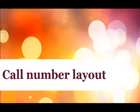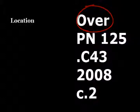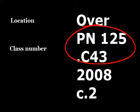The first thing we will cover is the layout of a call number. All items in the library have a label on the spine or on the front cover with the call number. The call number is composed of three parts: a location code, a class number, and holdings information.